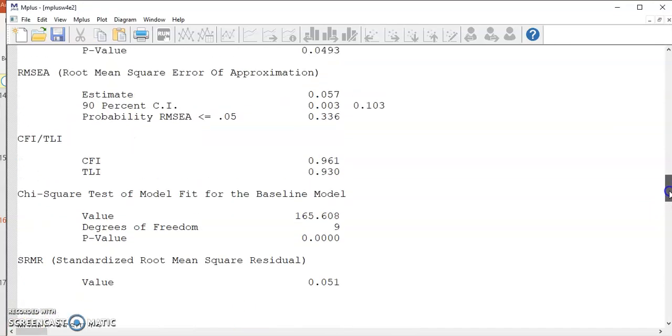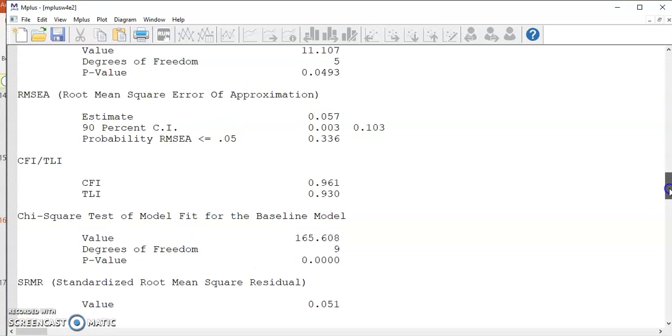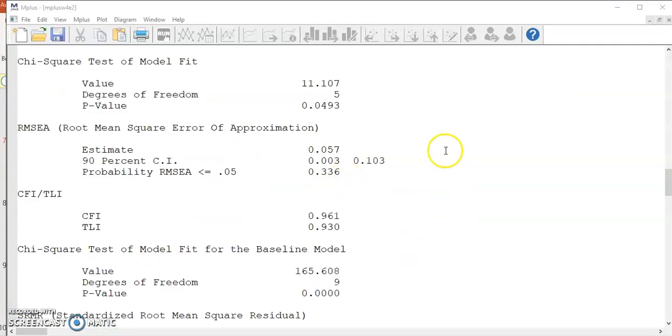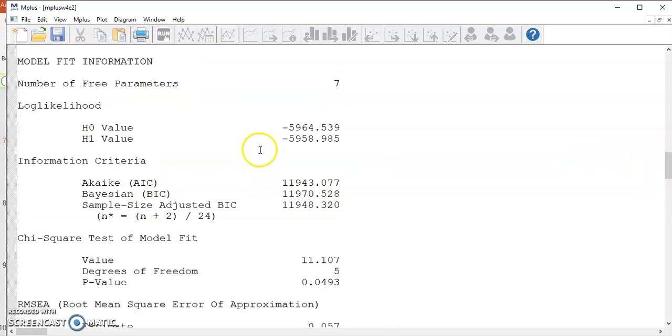So based on the model fit information we have, we can conclude that the structural relationships proposed in this model is strongly supported by the observed data. There are some additional model fit information in the output file. For example, the log likelihood values. Without going into too much details, I want to tell you that you want to look at how close those two values are. The closer they are, the better model fit you have.